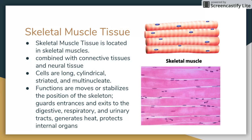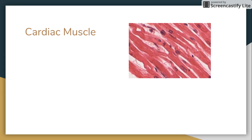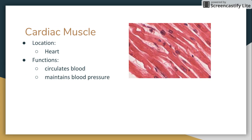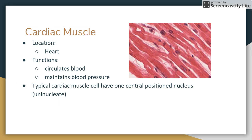Skeletal muscle also guards the respiratory and urinary tracts, generates heat, and protects internal organs. Cardiac muscle is located in the heart, and its functions are to circulate blood and to maintain blood pressure.